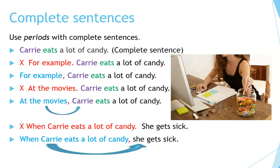For example, comma, 'Carrie eats a lot of candy.' The 'for example' is connected to the complete sentence. 'At the movies.' — that is not a complete sentence. But 'At the movies, Carrie eats a lot of candy.' — now it's a complete sentence.